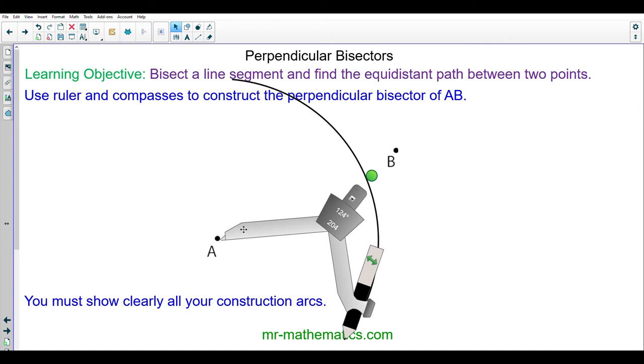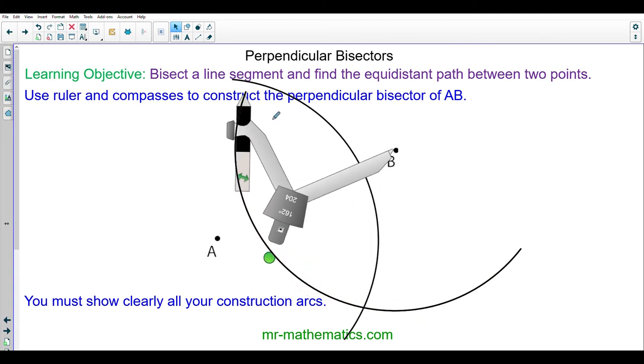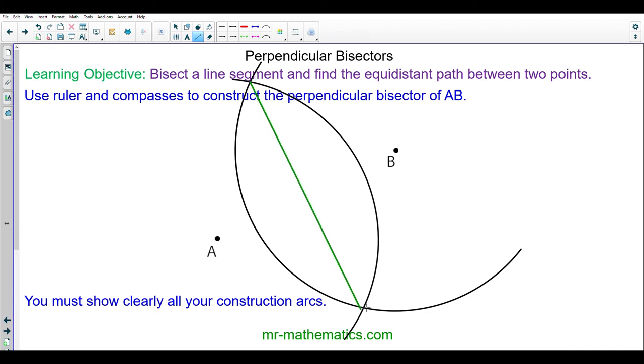Again remember to keep the radius fixed and drag it over to point B and we're going to create another arc of equal radius. I'm going to draw the perpendicular bisector which is a line that intersects where both arcs cross.